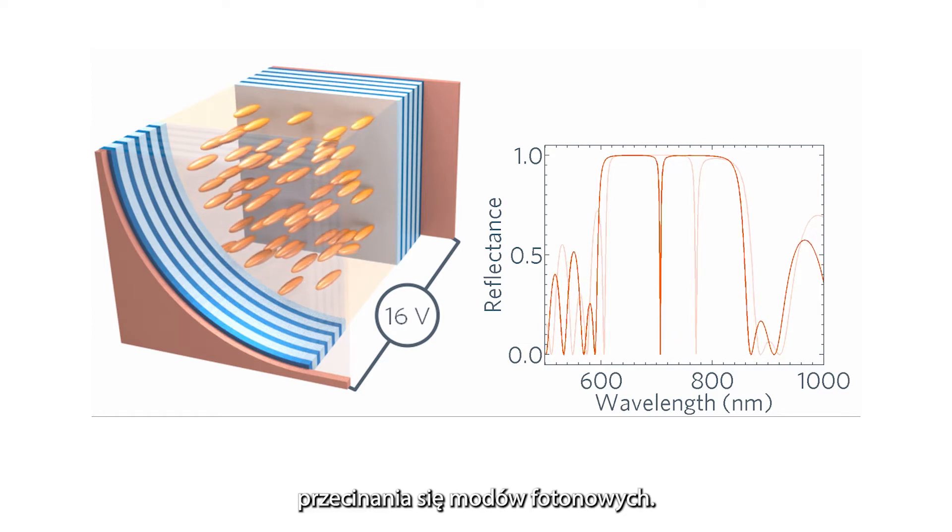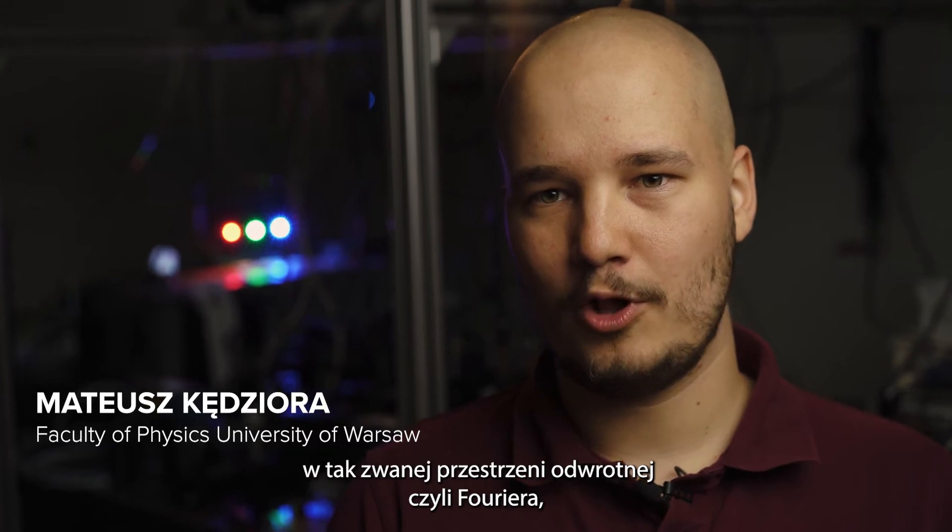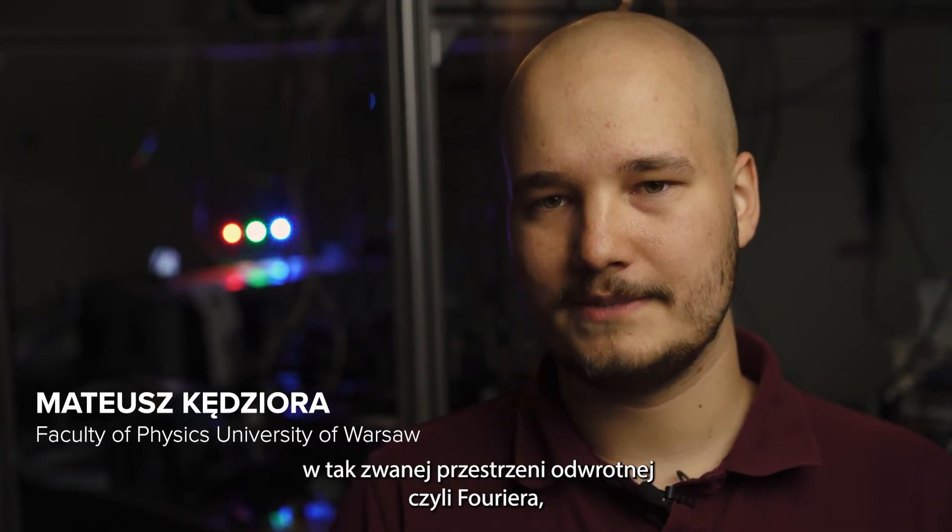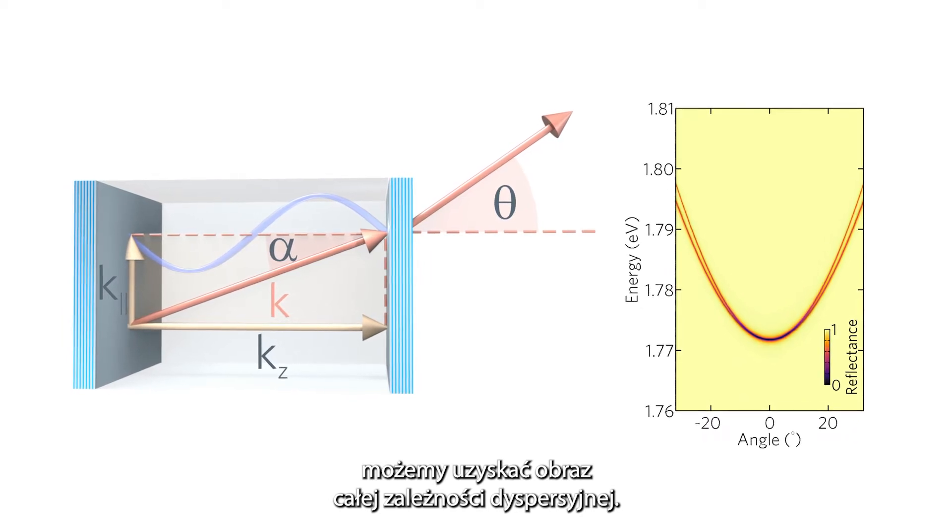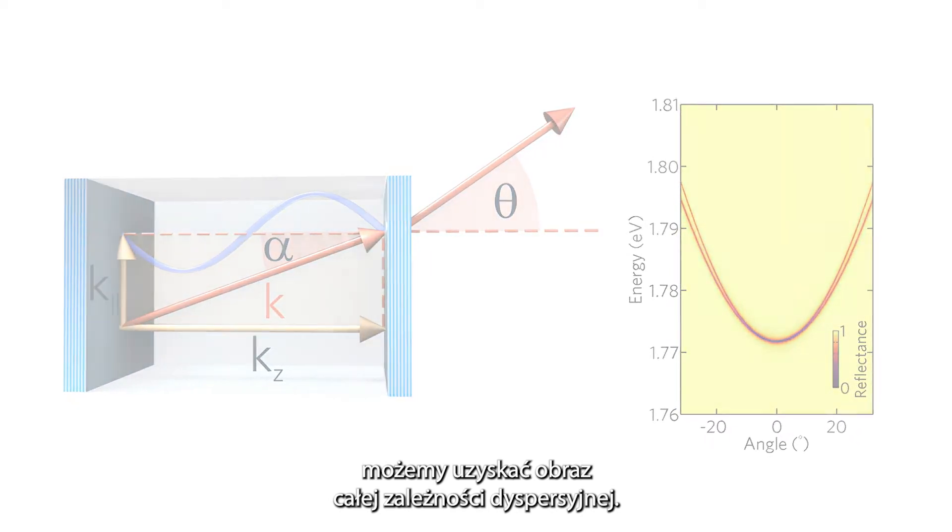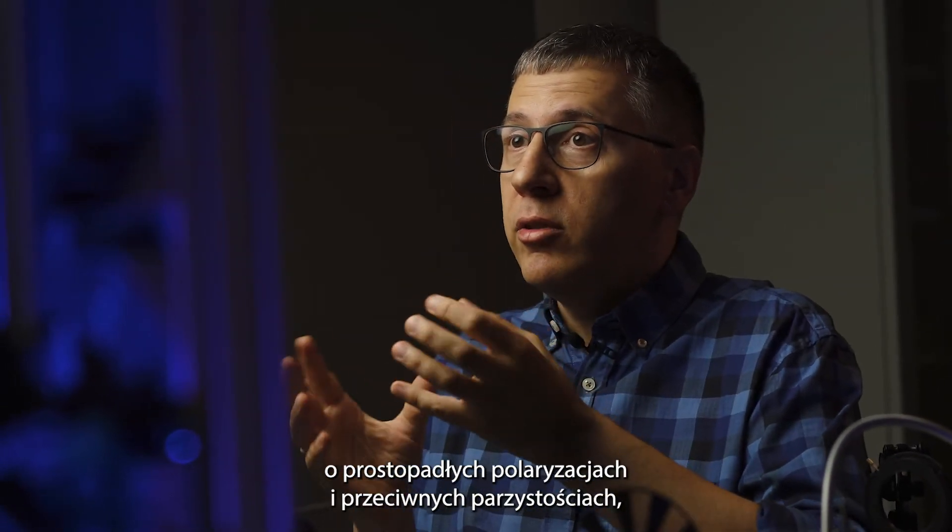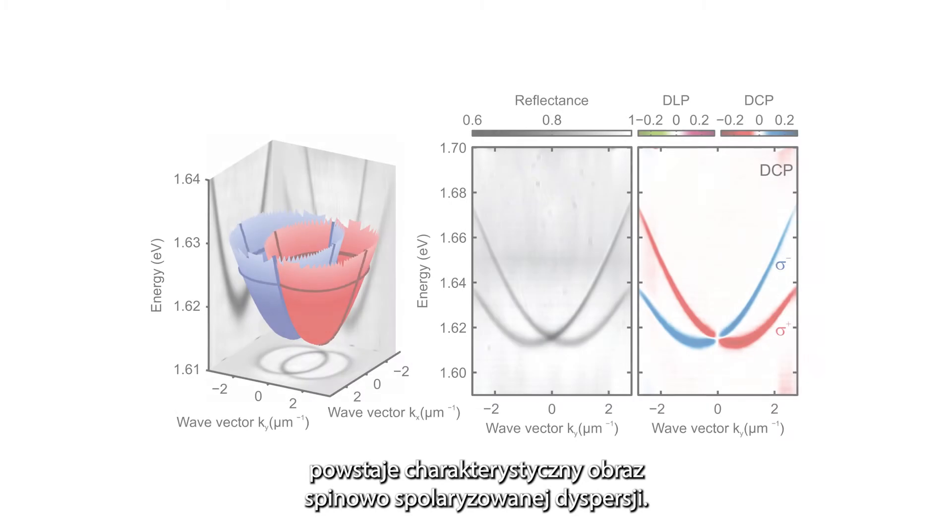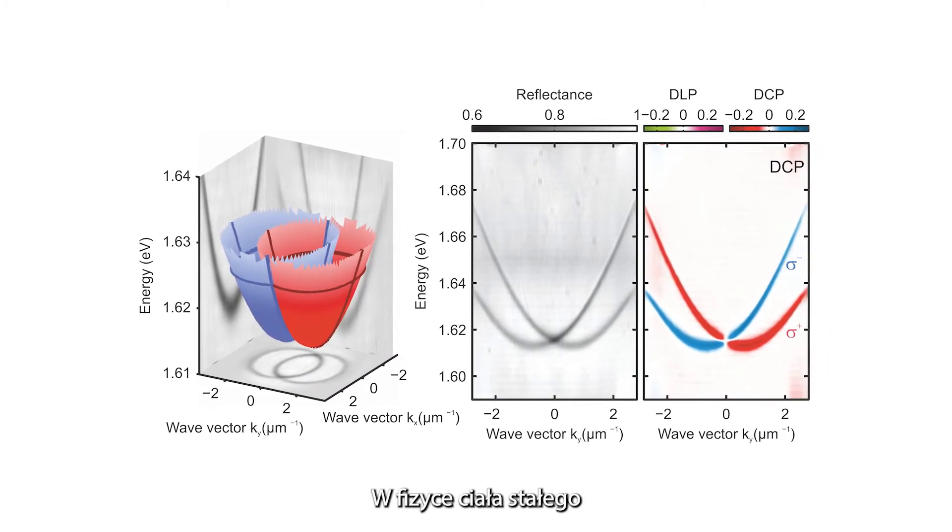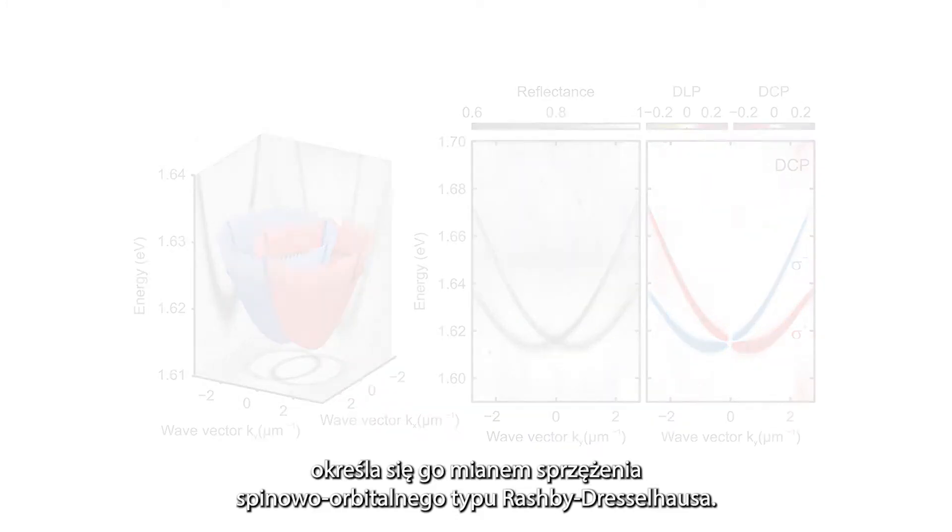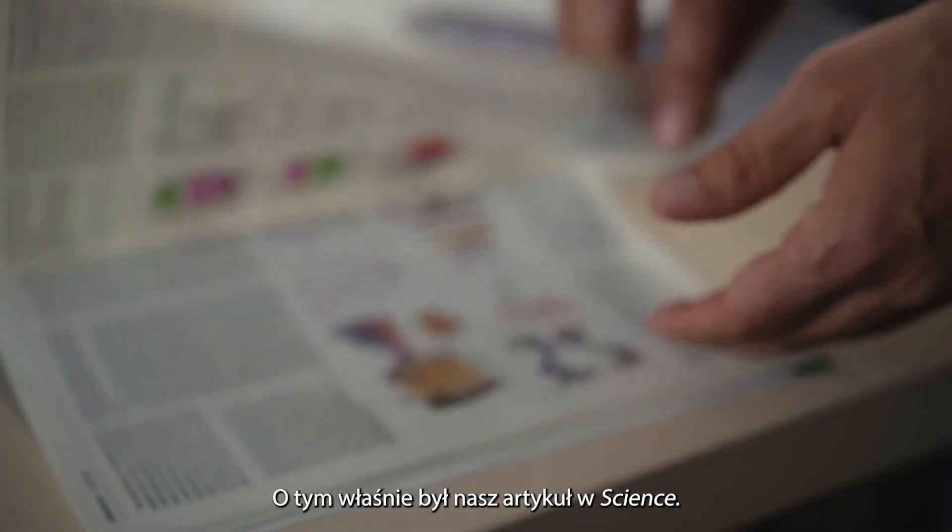By using appropriate imaging, the so-called reciprocal or Fourier space, we can image the full dispersion relation. When we tune two photonic modes of orthogonal polarization and different parity to the resonance, a characteristic scheme of spin-polarized dispersion is formed, which in solid state physics is called the Rashba-Dresselhaus spin-orbit coupling. This is what our article in Science was about.